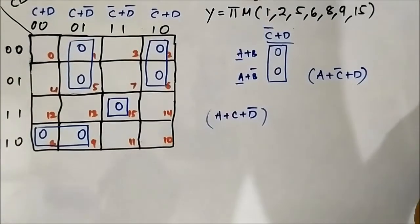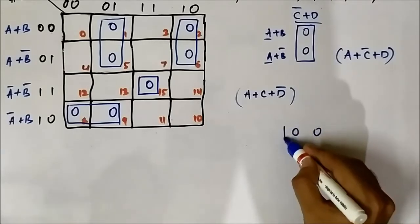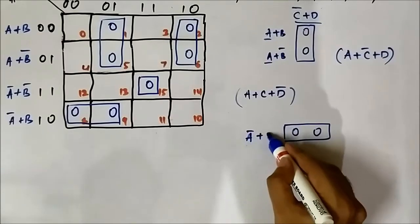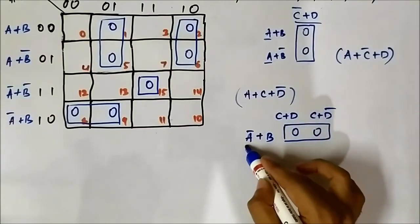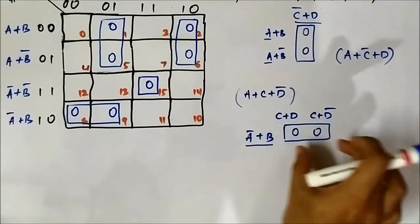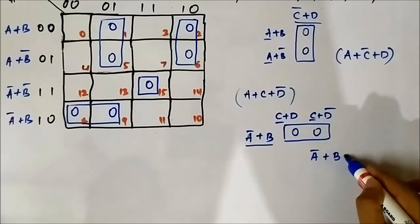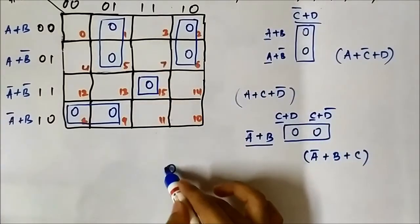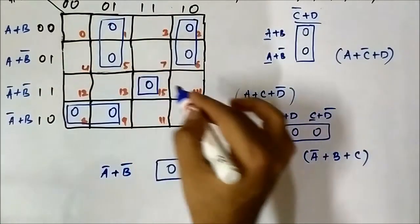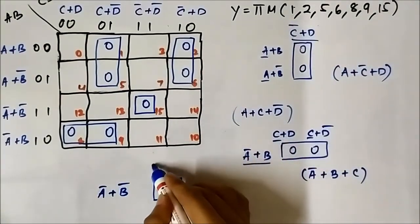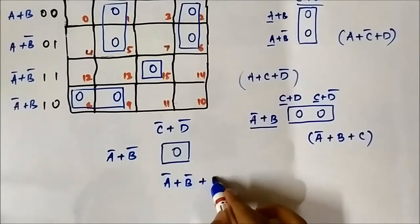Now for this pair, the horizontal component is A bar or B. The vertical components are C bar or D and C or D bar. The whole horizontal component is common for these two marked cells, and in the vertical side we have C common. So it is A bar or B or C. And for this single cell, we have A bar or B bar in the horizontal side and C bar or D bar in the vertical side.